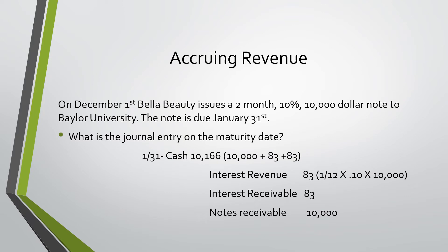Finally, what is the journal entry on the maturity date? We would debit cash of ten thousand one hundred and sixty-six dollars, which would be the original amount loaned plus the two months worth of interest. We would credit interest revenue for eighty-three dollars to record the second month of interest that we earned. We would credit interest receivable of eighty-three dollars because we have already received that, and then we credit notes receivable of ten thousand.